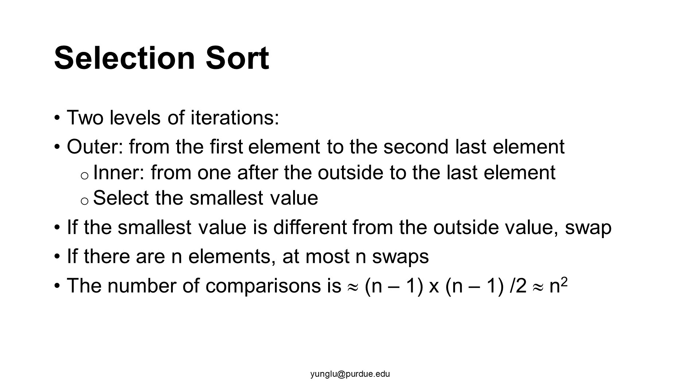The outer iteration goes through n minus 1 elements. The inner iteration on average goes through (n - 1) / 2 elements. Thus, the selection sort has approximately n² comparisons. For simplicity, we can size only the highest power term and that is n².